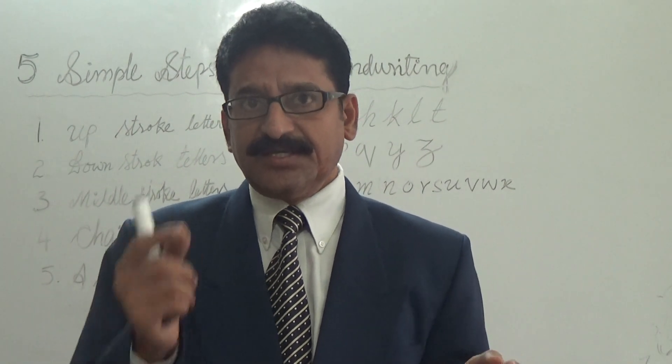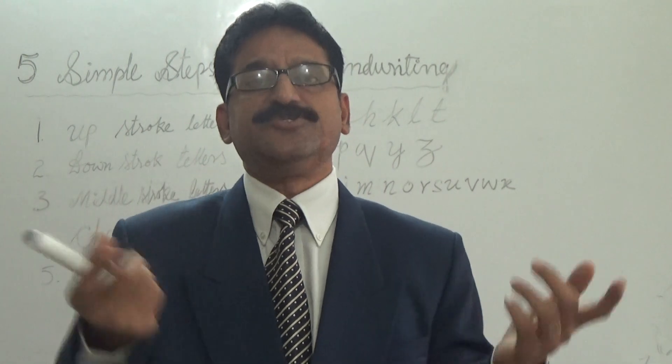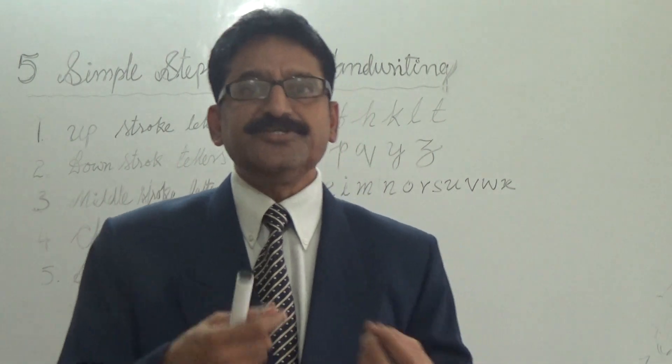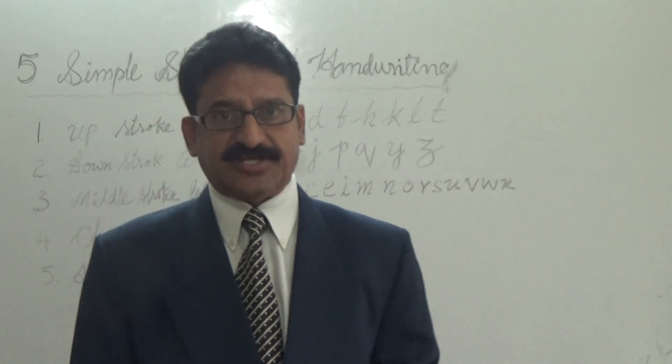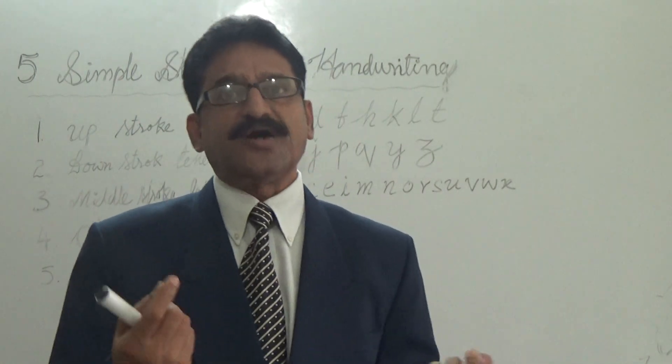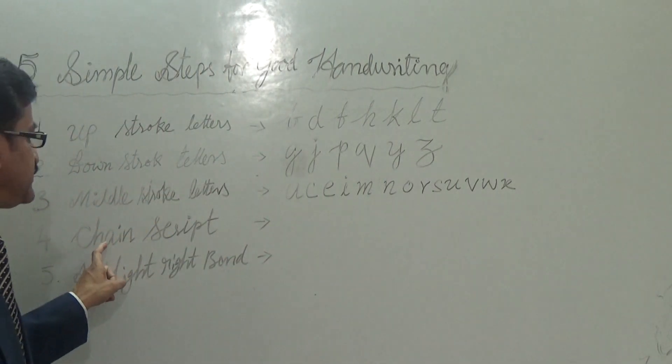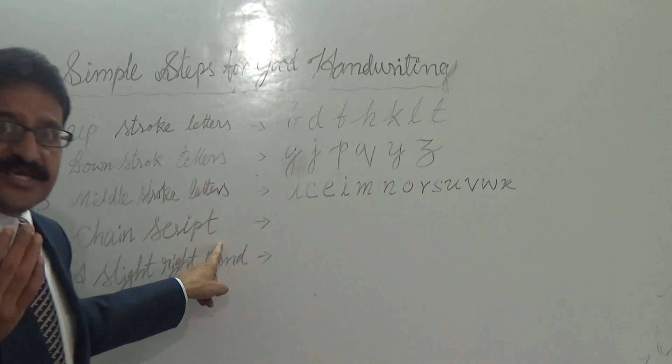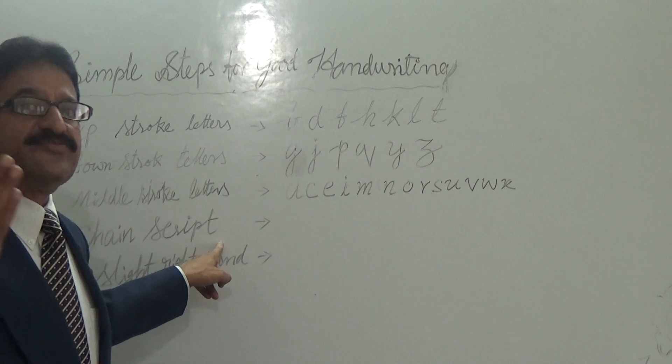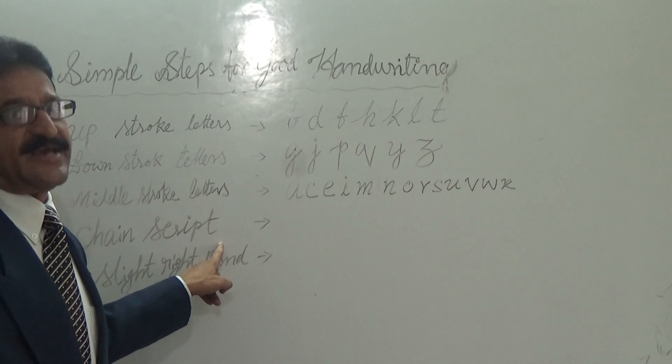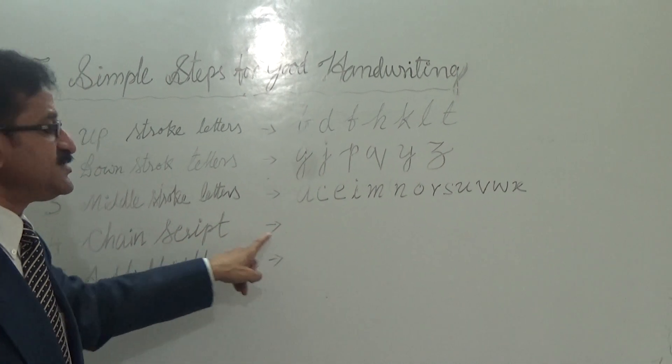While writing italics, people have to write individual letters. While writing individual letters, it takes much time. But while writing, fastness is also important. So if we practice writing chain script, it saves time. You can write fast and it also looks nice. So we have to practice chain script.